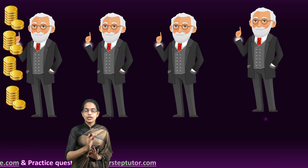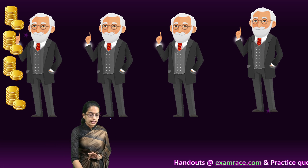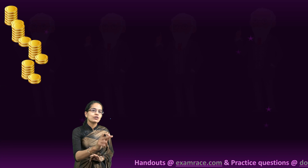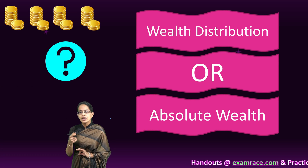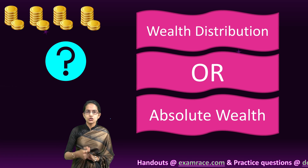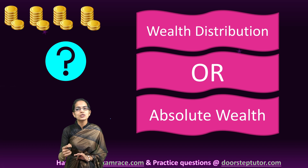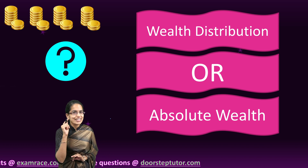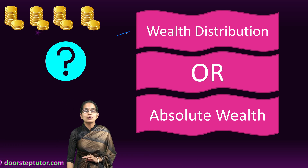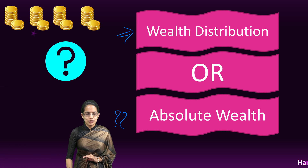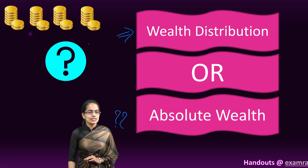In the previous case where there was equitable distribution the Gini coefficient was 0, and where there is perfect inequality it turns out to be 1. Now, the question is whether we understand wealth distribution with Gini coefficient or absolute wealth. With Gini coefficient we are only talking about distribution, not about absolute wealth. Let's take the example of two nations: United States and Turkey.